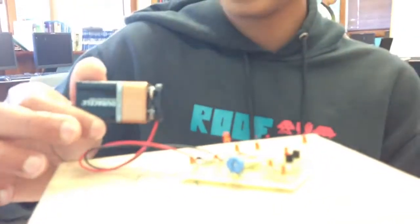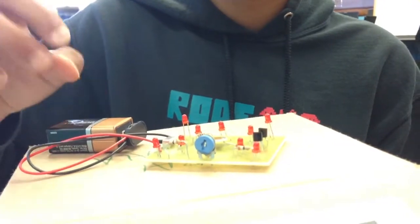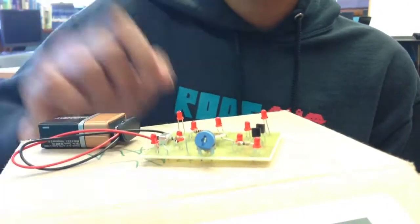I'll give you a description of the device. This is a battery and it's connected to a battery snap. The battery snap takes electricity from the battery and puts it through the positive or negative end.